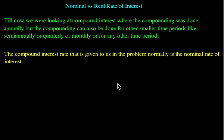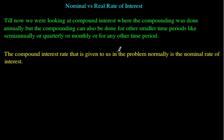Now that we know general things about simple interest and compound interest, we will be looking at the different types of interest rates which could be given to us and how to compute one interest rate from the other. Till now we have been doing compound interest compounded annually, but compounding can also be done for other time periods like semi-annually, quarterly, monthly, or even daily.